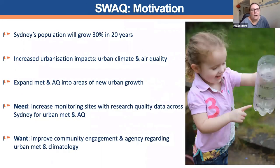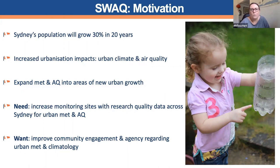Our motivation behind SWAC was that Sydney's population is going to grow 30% in the next 20 years. With this increased urbanisation, you have impacts to both the urban climate and air quality. For urban climate, we tend to find that cities are warmer than their rural surrounds due to urbanisation retaining heat within the city. It's really important to capture information on just how hot it is in different parts of the city and how this may differ spatially.